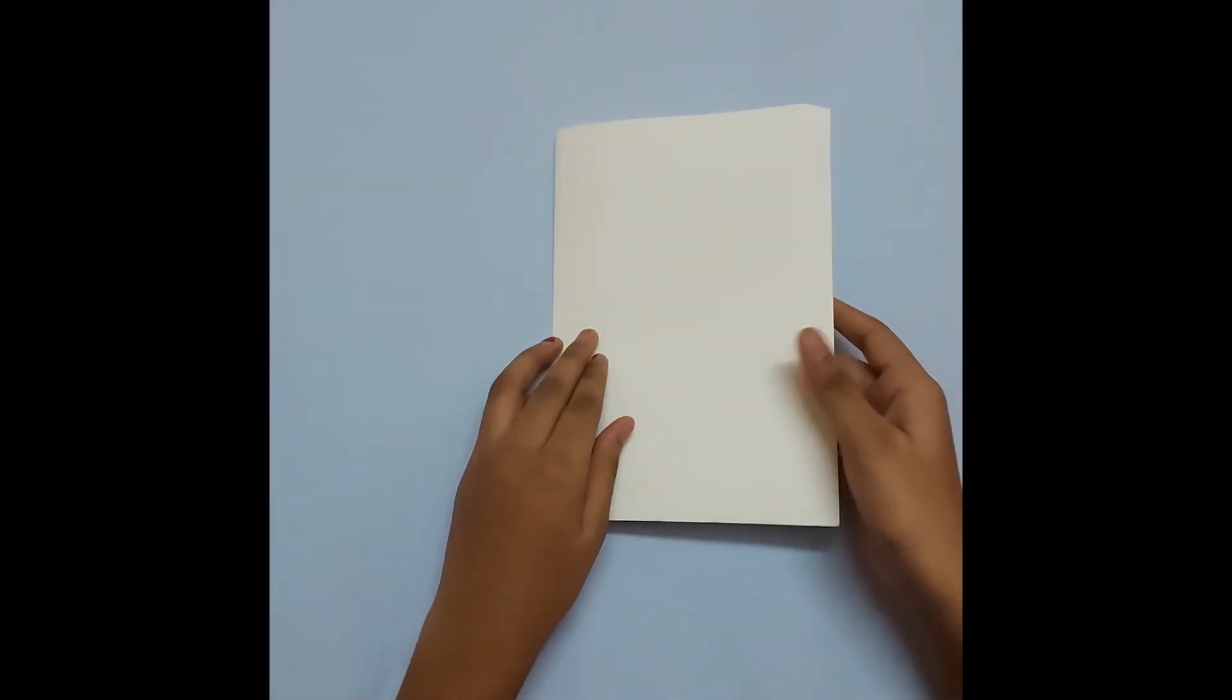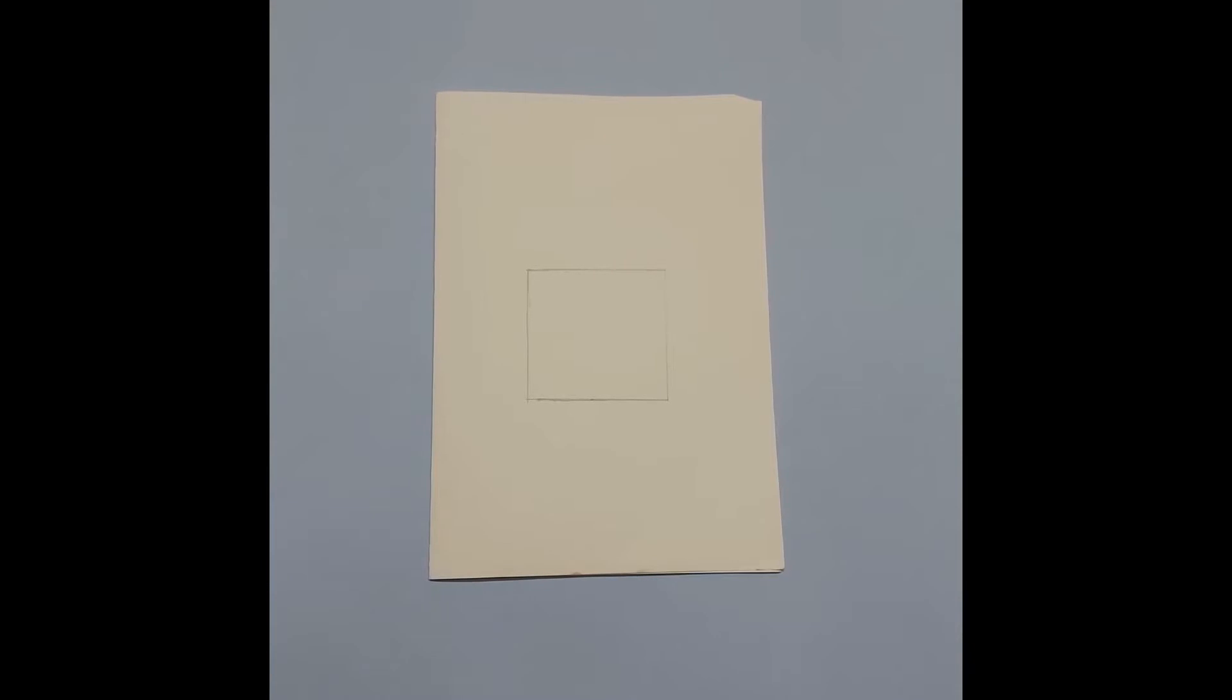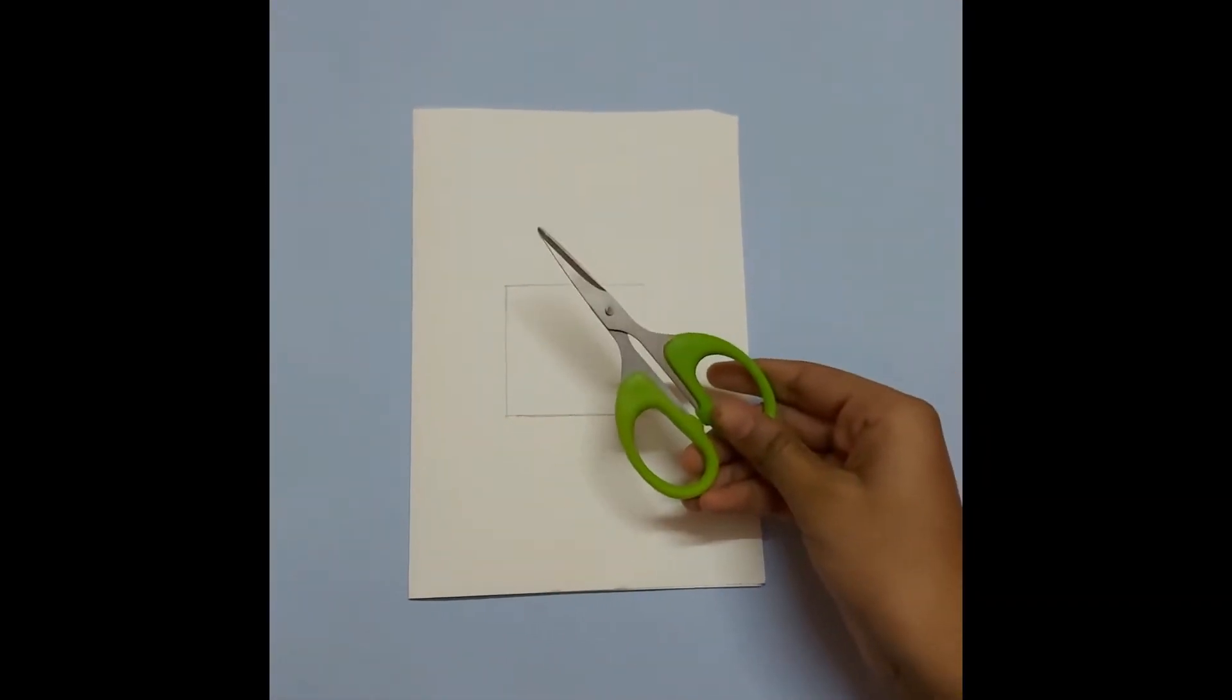Next everyone take the A4 size chart paper and fold it into half like this. Next everyone take a pencil and draw a square like this and using scissors cut it out.